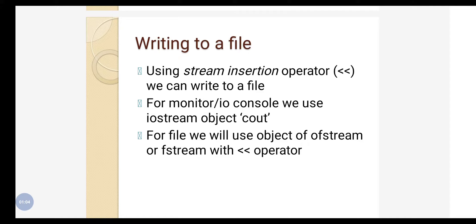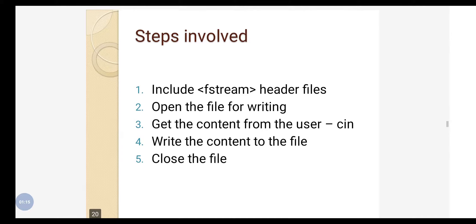For file operations, we use the object of the ofstream or fstream class along with the stream insertion operator. The steps to write to a file are: first, include the fstream header file — without it, you cannot create any objects to write to a file. Then open the file for writing, get the data from the user using cin, write the contents to the file, and then close the file.